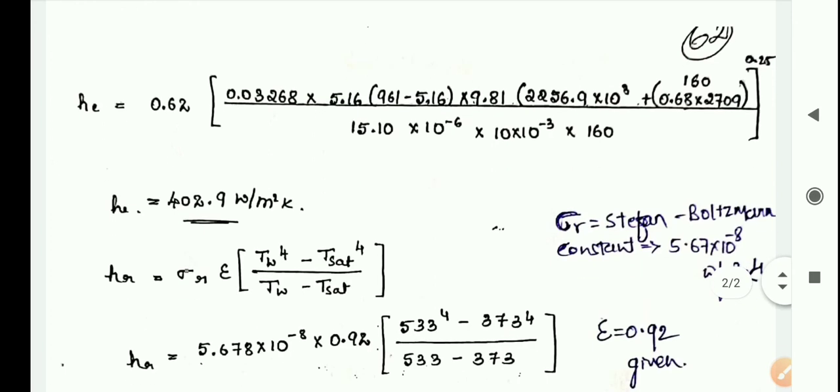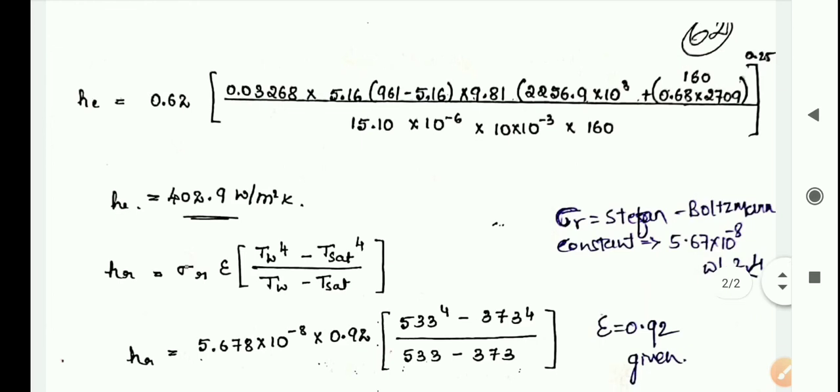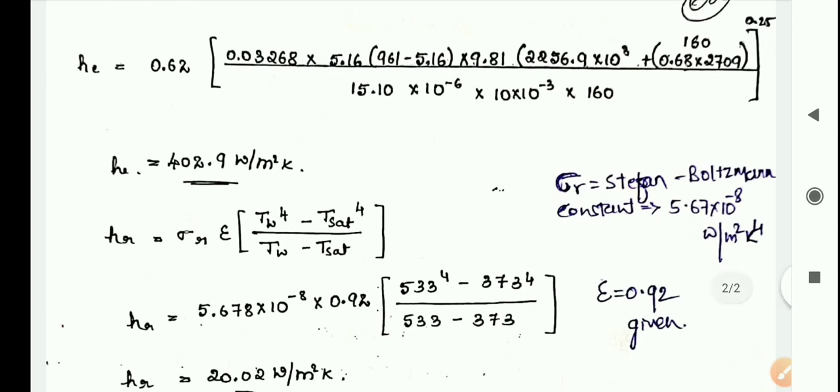Now we have to find hr. For hr, the formula is also available on the same page number 143. That is sigma r times epsilon times (Tw raised to 4 minus Tsat raised to 4) divided by (Tw minus Tsat), where sigma r is the Stefan-Boltzmann constant, 5.67 times 10 raised to minus 8.